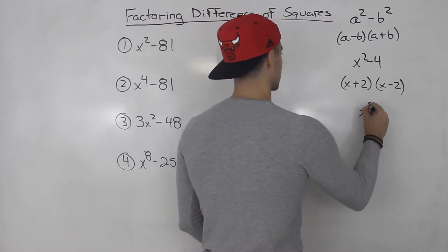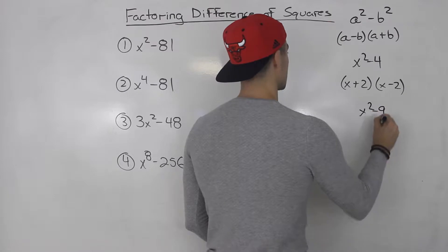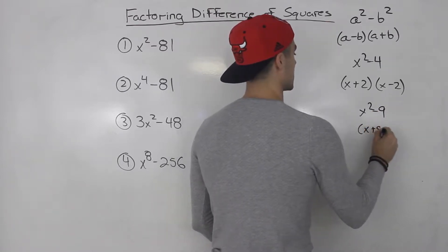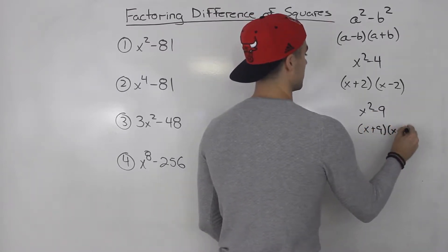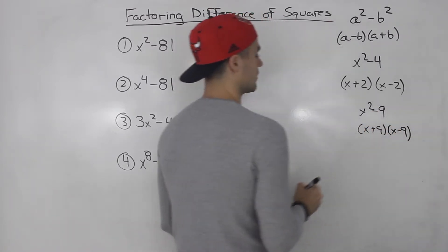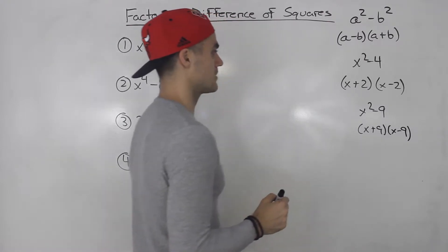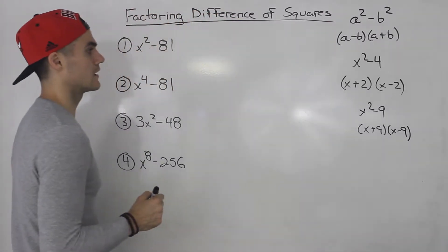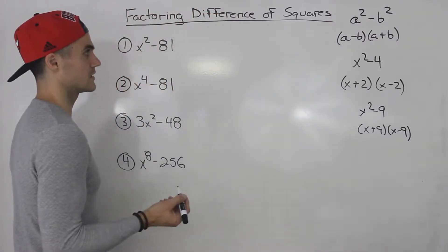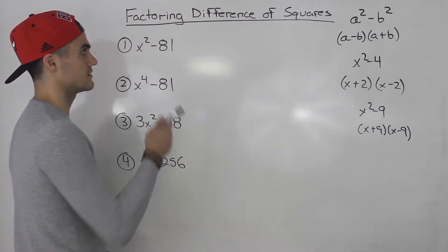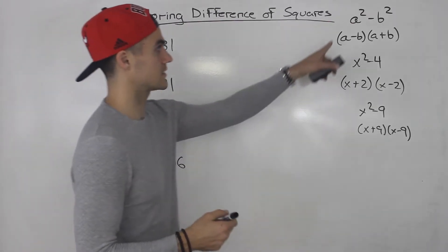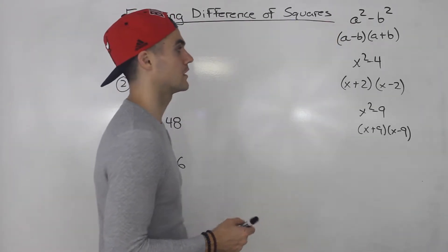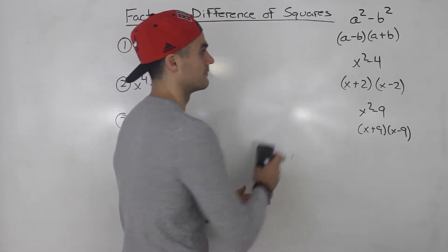So x squared minus nine, for example, factors to x plus three, x minus three. That's what I mean when we're dealing with a difference of squares — you just want to remember that formula.